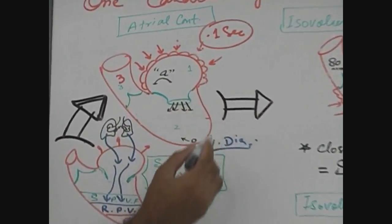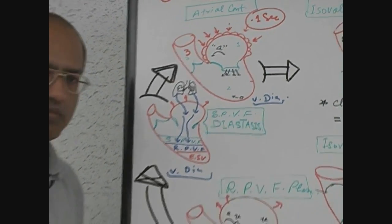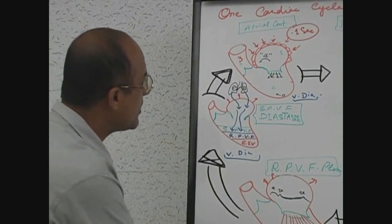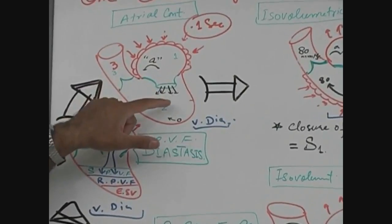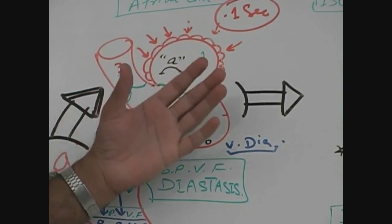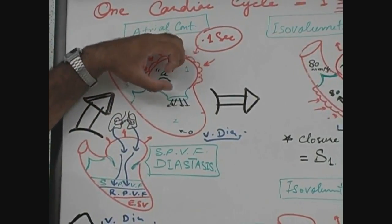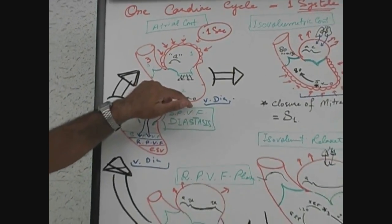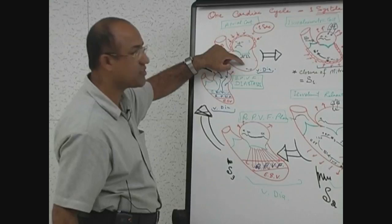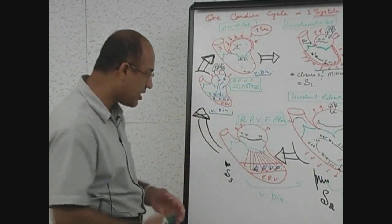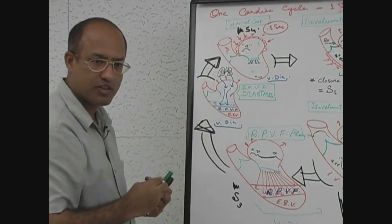In some patients, a hypertrophied atrium pumps against a hypertrophied or stiffened ventricle. The atria must put in extraordinary effort to push blood in, and the forceful atrial contraction can produce a sound called S4. S4 is usually a pathological sound.